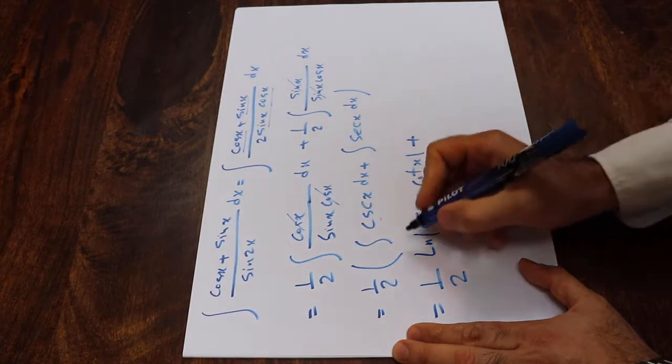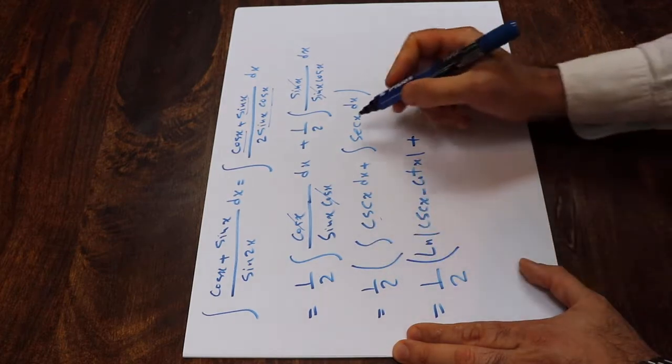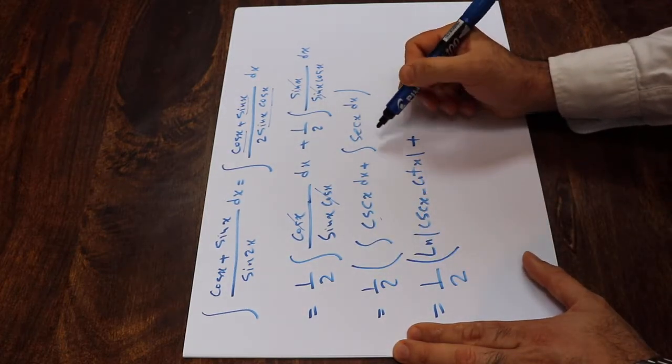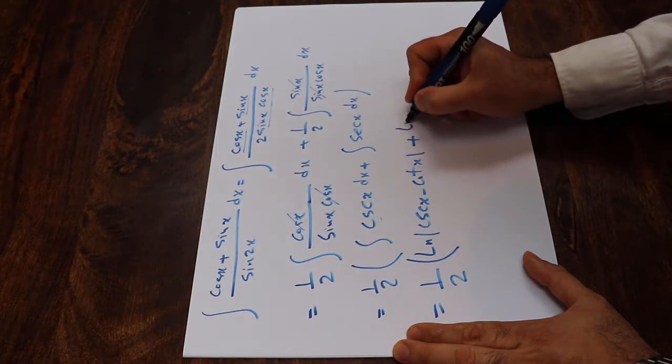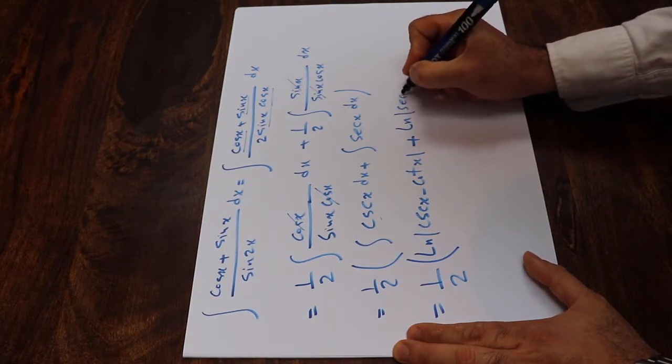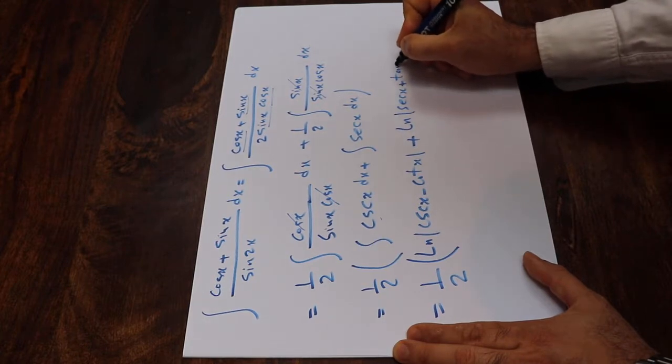Plus, the parenthesis should be here, the integral of secant x as well from table of integral, we know that the integral of secant x is equal to ln secant x plus tangent x.